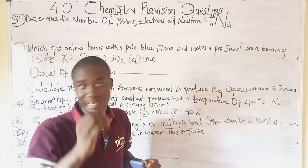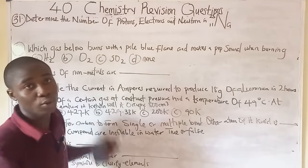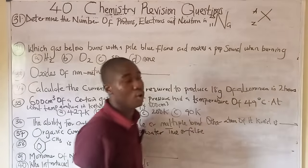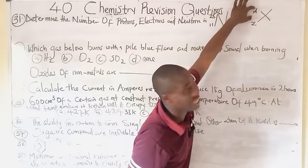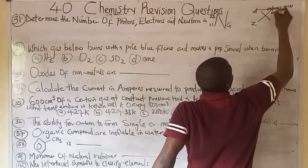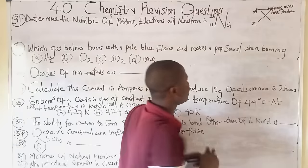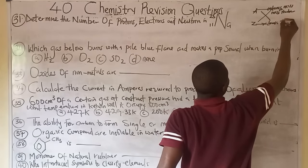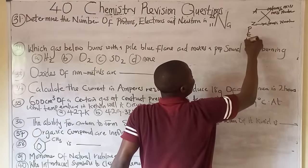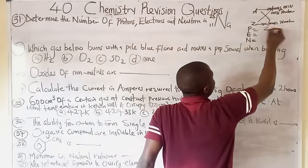To find proton number: it equals Z (atomic number). For electron number: it equals proton number for a neutral atom. For neutron number: it equals A − Z (mass number minus atomic number). Sodium has no charge, so it is neutral.